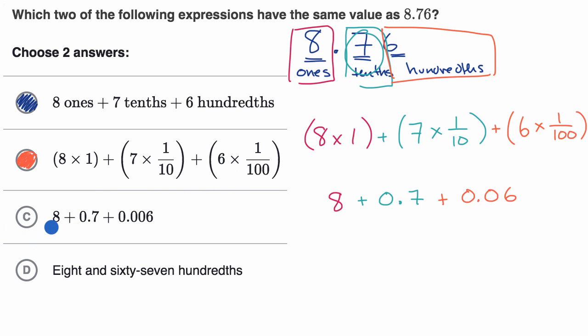They did write eight ones. They did write seven tenths, but they did not write six hundredths here. They wrote six thousandths here. So we can rule that one out.